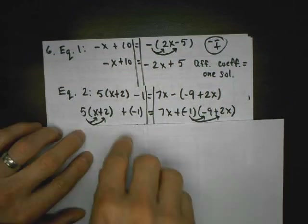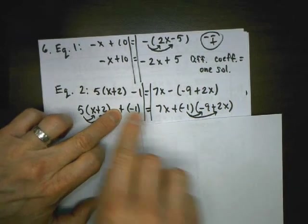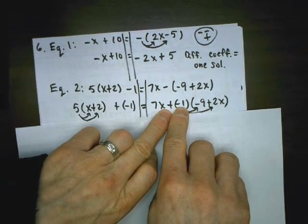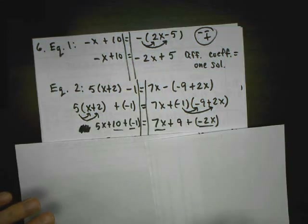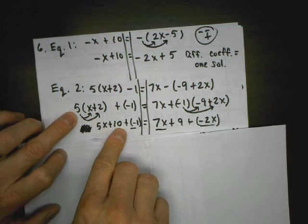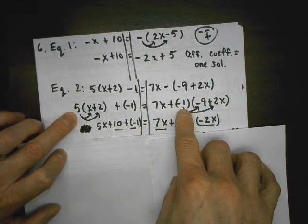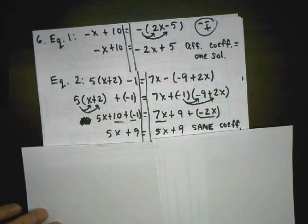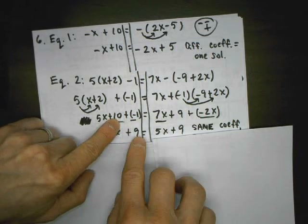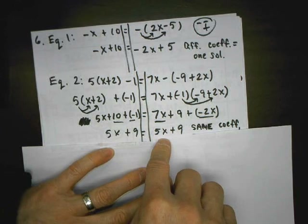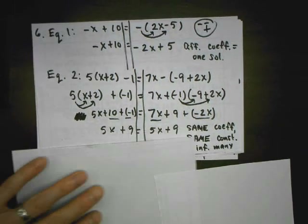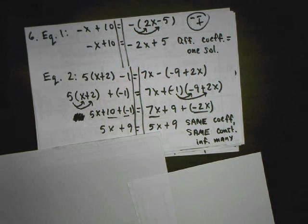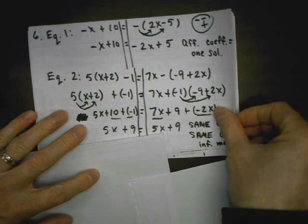Equation two: I do the rule for subtraction first — add the opposite, draw two sticks with a negative one — that's distributing a negative one. When I distribute, I get five times x is five x, five times two is ten. I copy the rest. Negative one times negative nine is positive nine; negative times positive is negative. I combine like terms: ten and negative one is nine; seven x and negative two x is five x. Both sides are simplified. I see the same coefficients and the same constants — that's infinitely many solutions.